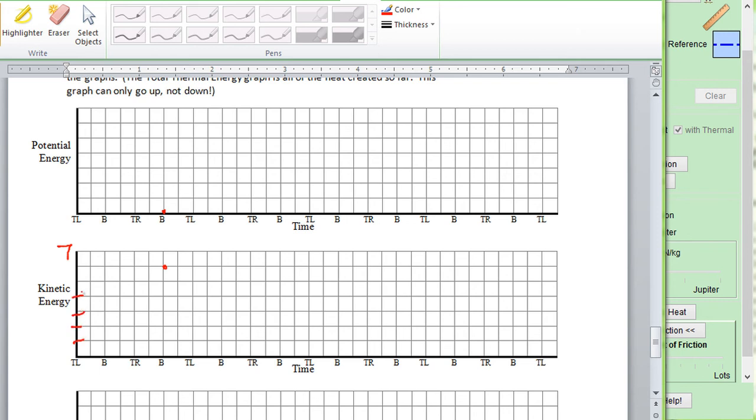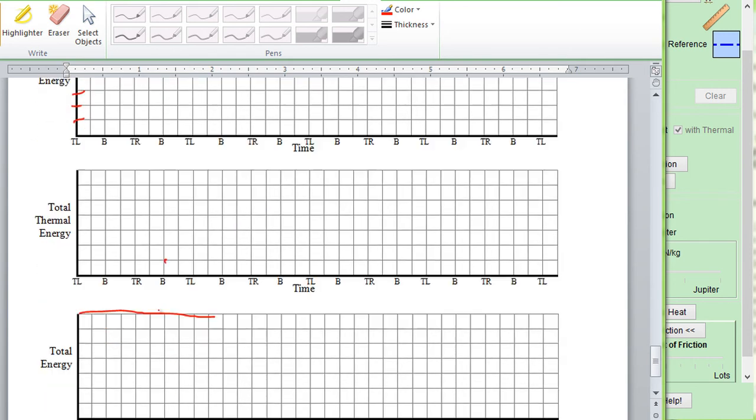Notice these all had to add up to seven. I keep saying seven because we have one, two, three, four, five, six, seven units. These are just arbitrary units. You can think of it as joules or kilojoules, whatever. So this is zero plus six plus one equals seven. So be accurate like that.